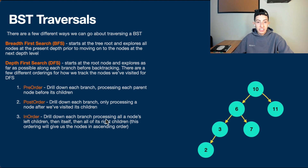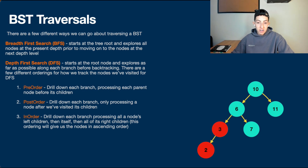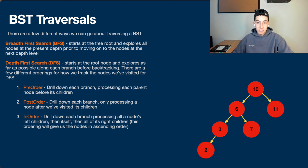Finally we have in-order, where we drill down each branch processing all of a node's left children, then itself, then all of its right children. This ordering gives us the nodes in ascending order. Starting at 10, we visit but don't process it. Visit 6, visit 3, visit 2 — 2 has no left children so we process it. We process 3, backtrack to 6 and process it, then go to 7 and process it, then process 10, then visit and process 11. These are the different depth-first search orderings — it's a bit of memorization, but the code for each differs only slightly.